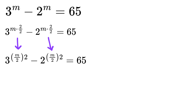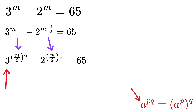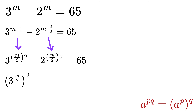Next, we will use a power rule where a raised to p times q is the same as a raised to p, whole raised to q. So here a is 3, p is m over 2, and q is 2. Therefore, we can rewrite this expression as 3 raised to m over 2, whole raised to 2. And similarly, this will be minus 2 raised to m over 2, whole raised to 2.